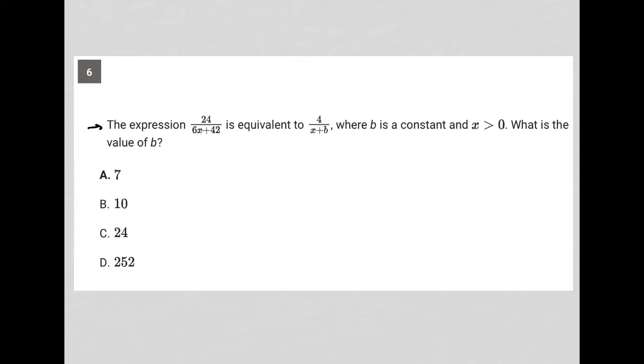So this question says the expression 24 over 6x plus 42 is equivalent to 4 over x plus b, where b is a constant and x is greater than 0. What is the value of b?